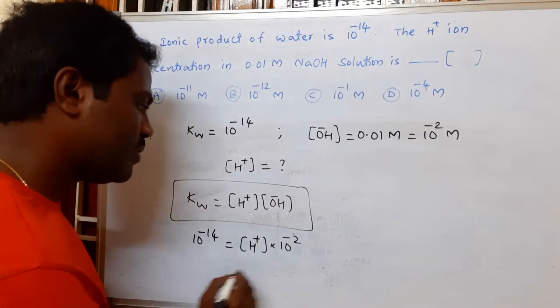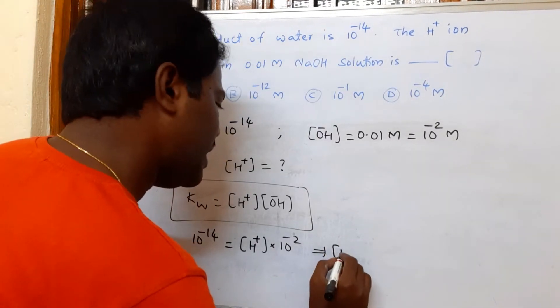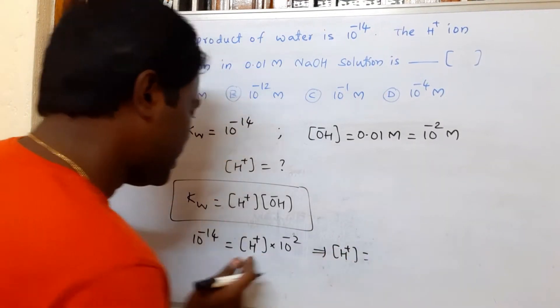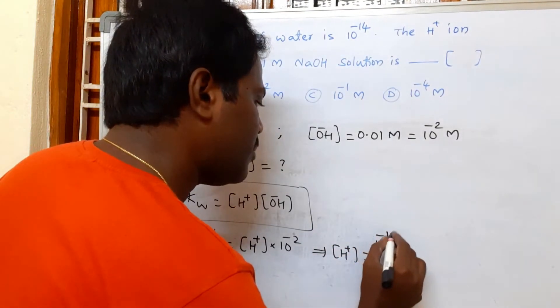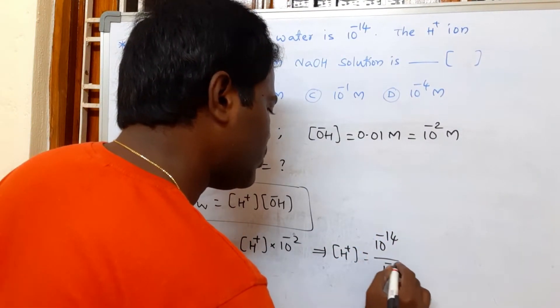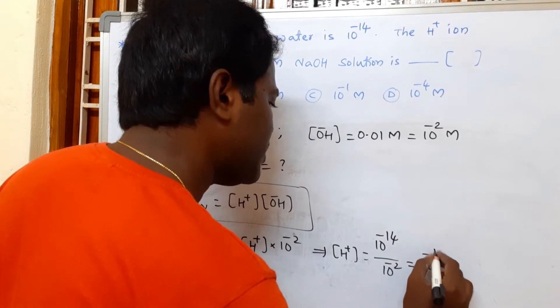Which implies the concentration of H+ equals 10^-14 divided by 10^-2, so that value is 10^-12.